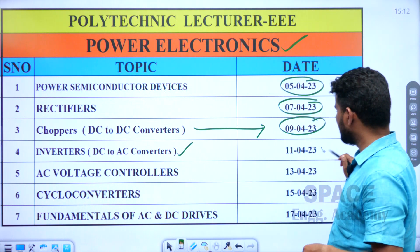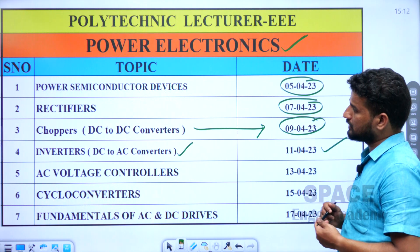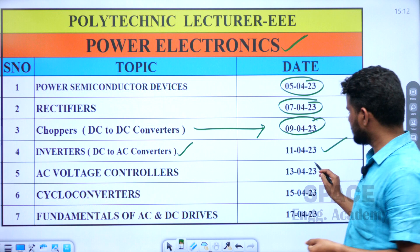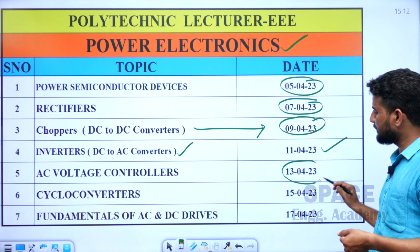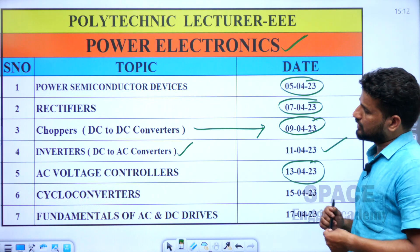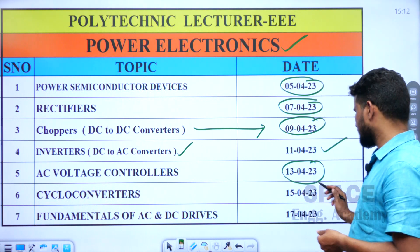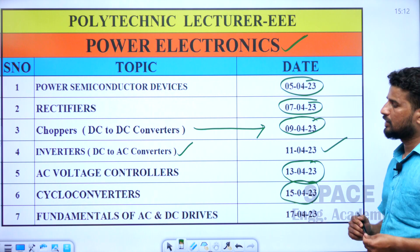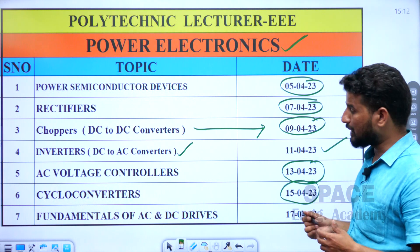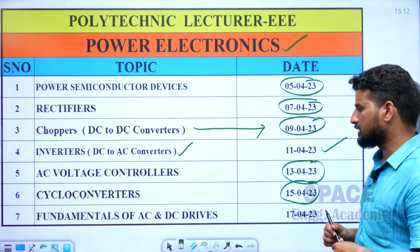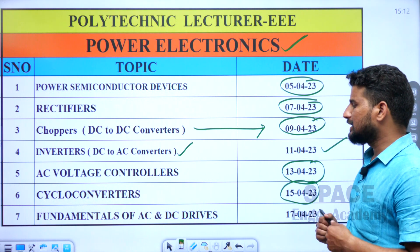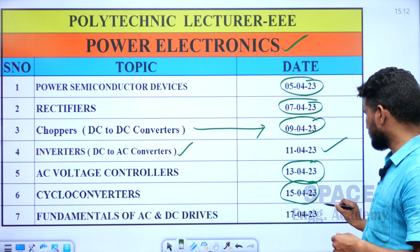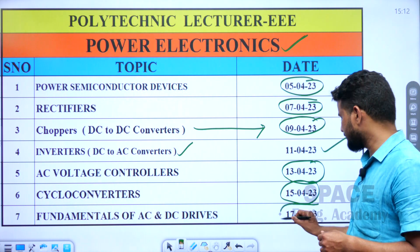The inverters exam will be on the 11th of April. AC voltage control will be conducted on the 13th of April, and cycloconverters will be conducted on the 15th of April. The last topic in power electronics is fundamentals of AC and DC drives, which will be conducted on the 17th of April.